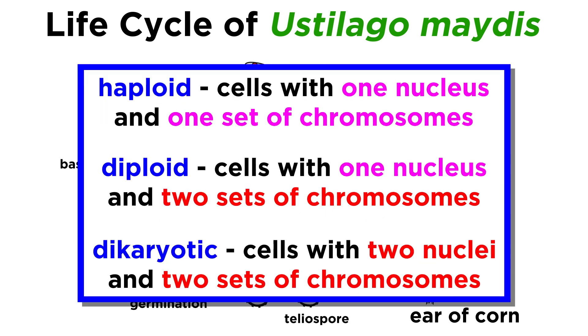We must not confuse dicaryotic with diploid. In diploid organisms, the nuclei from parents fuse into one, whereas dicaryotic fungi have two separate nuclei that do not fuse into one.